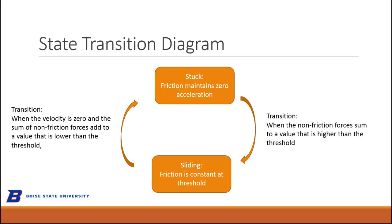The state transition diagram is pretty powerful, and in this case it's pretty trivial, but it gets the essence of what's going on. The blocks represent states of the system — one is stuck, one is sliding. Inside each block, I describe how the equations behave. When it's in the stuck state, friction is whatever it needs to be to maintain zero acceleration. In the sliding state, friction is constant at the threshold.